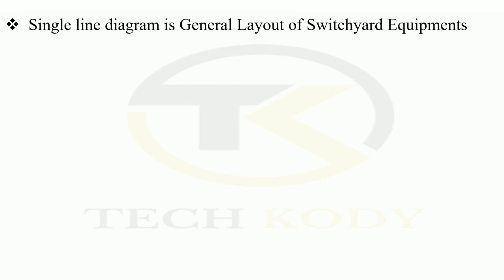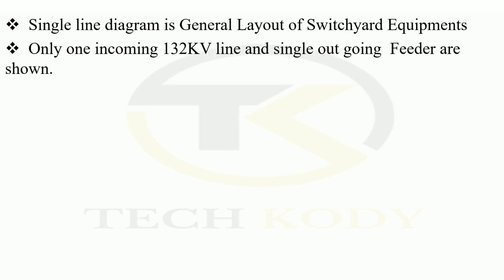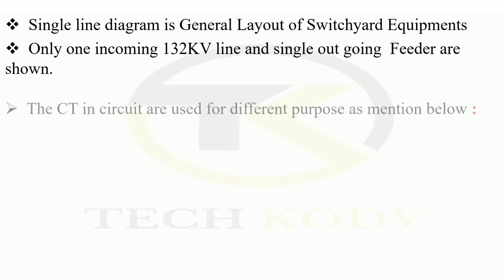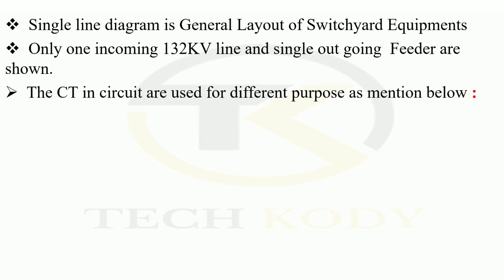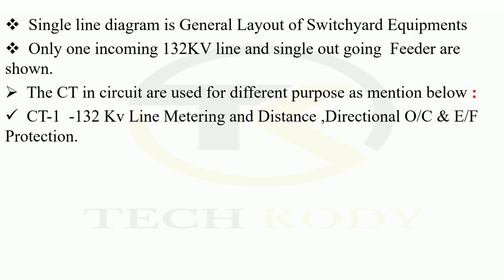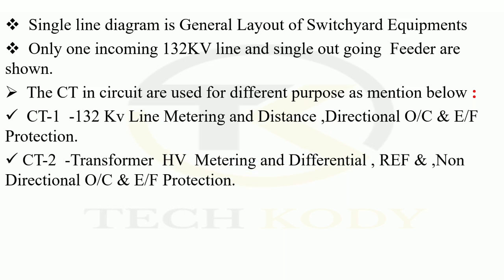The single line diagram is generally a layout of switchyard equipment. Only one incoming 132 kV line and single outgoing feeder are shown. The CT in the circuit is used for different purposes: CT1 for 132 kV line metering and distance directional overcurrent and earth fault protection. CT2 for transformer HV metering, differential, restricted earth fault and non-directional overcurrent earth fault protection.